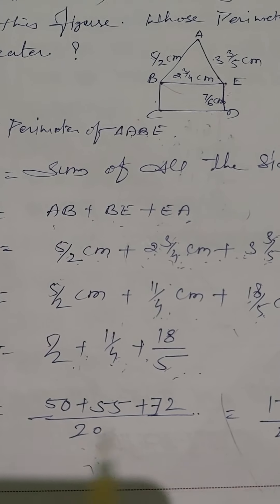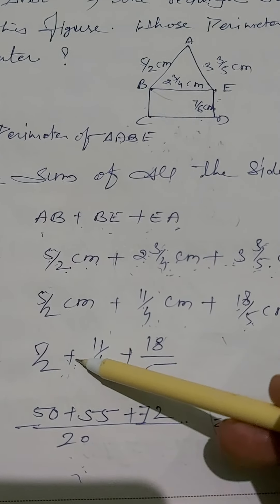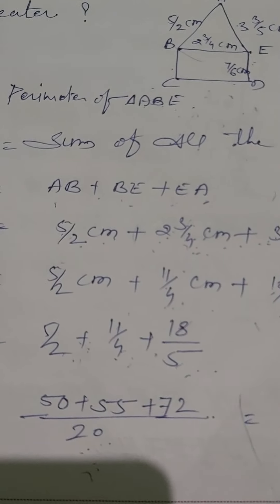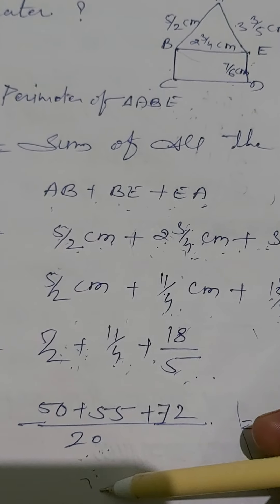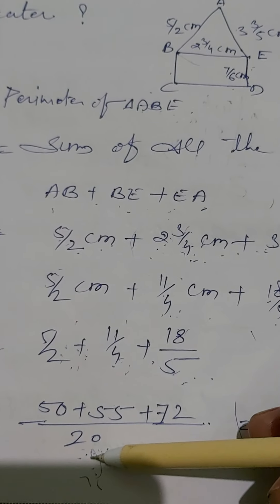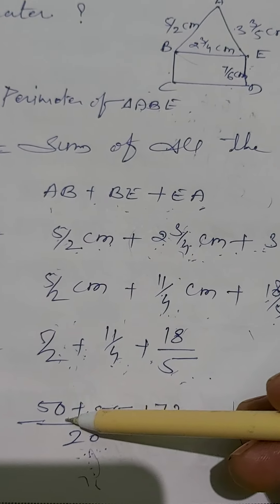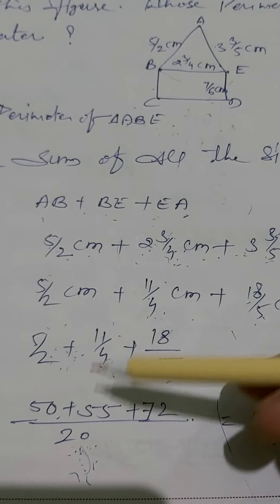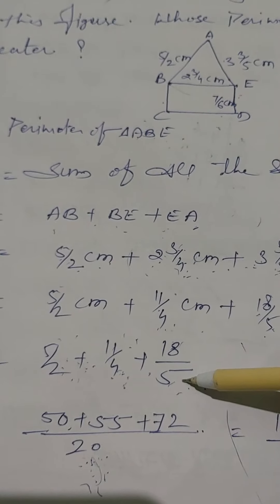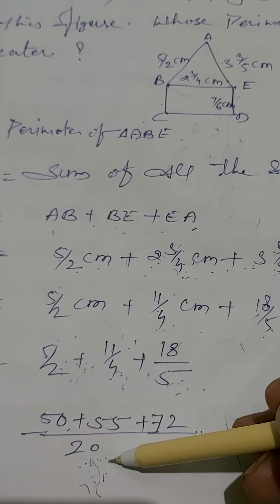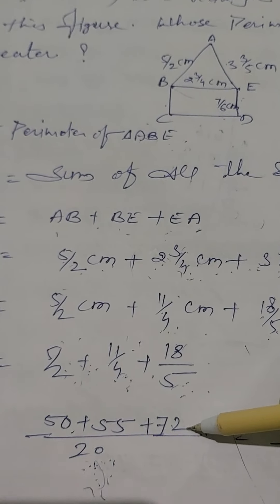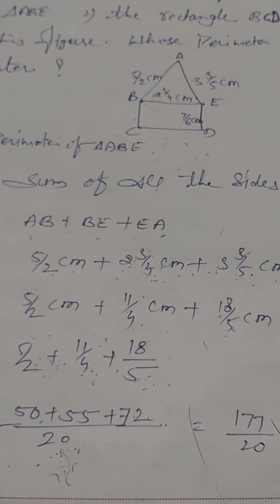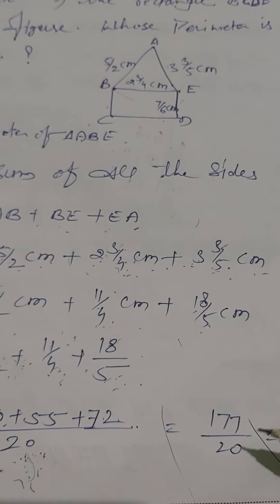Taking the LCM of 2, 4, and 5, which is 20: 5/2 becomes 50/20, 11/4 becomes 55/20, and 18/5 becomes 72/20. Adding them: 50 + 55 + 72 = 177. So the perimeter of triangle ABE is 177/20 centimeters.